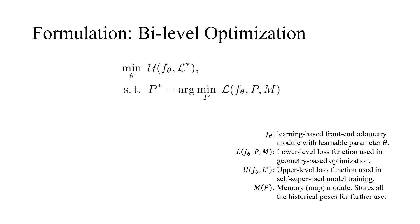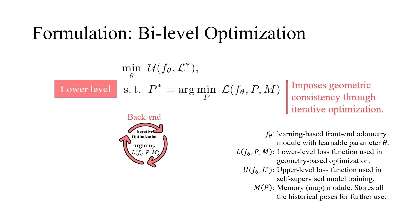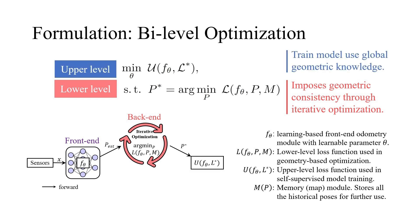So how do we achieve that? We formulate the SLAM task as a bi-level optimization problem. The lower-level optimization, corresponding to the back-end, receives the pose estimations from the front-end module and iteratively optimizes them to minimize the lower-level loss L. Then, the optimized pose P* are used to formulate the upper-level loss U, and back-propagate in one step to the front-end model to tune its parameter θ. In this way, we correlate the pose and model optimizations together and make them cooperatively contribute to a better trajectory.